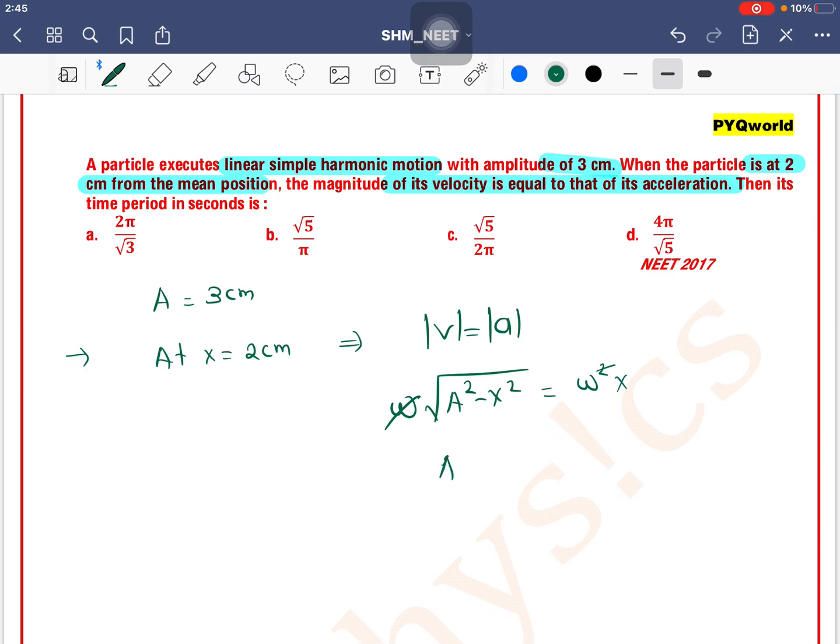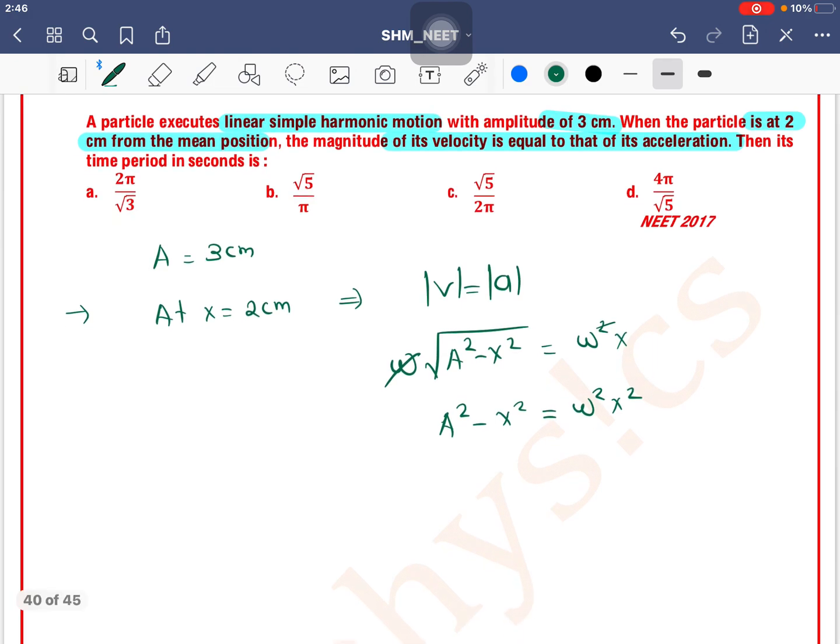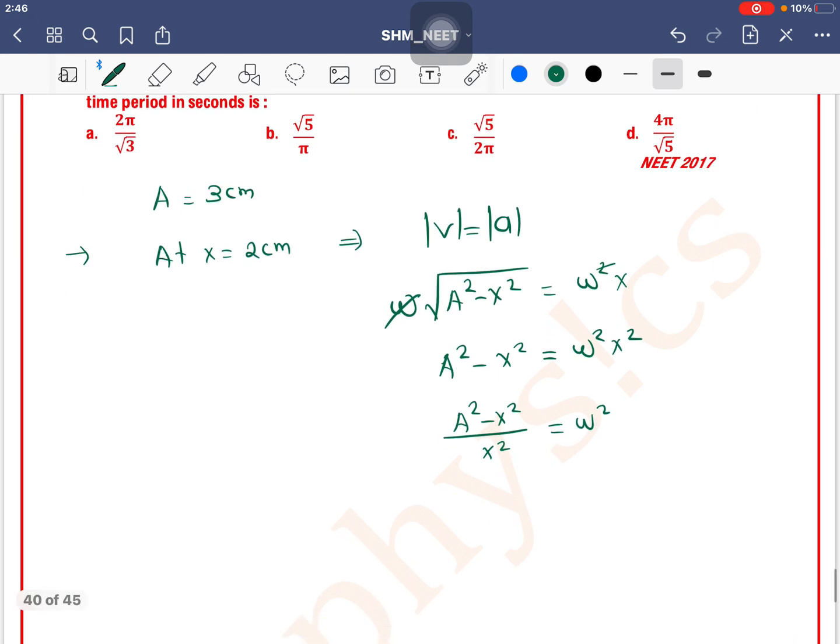Squaring both sides: A²-x² equals ω²x². Dividing by x²: (A²-x²)/x² equals ω². Substituting values: (3²-2²)/2² equals ω².